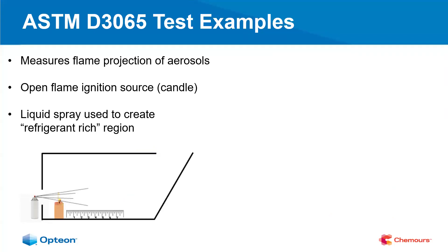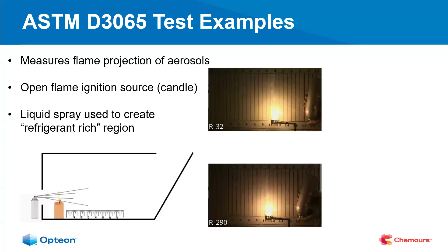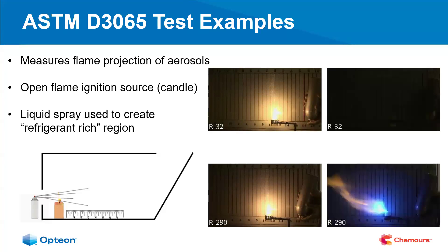Another test is the ASTM D3065 flame projection test, which measures the hazards of aerosol products. We invert a cylinder of refrigerant, spraying out a liquid-rich region across an open flame source — in this case a candle — to see what happens. With R-32 on top and propane on the bottom: every time we tested an A2L refrigerant, we extinguished the candle, primarily because you're not forming a flammable concentration at the candle and the pressure propelling the refrigerant forward actually extinguishes it. However, with propane, you could essentially create a blowtorch every time — propane is after all a soldering gas.